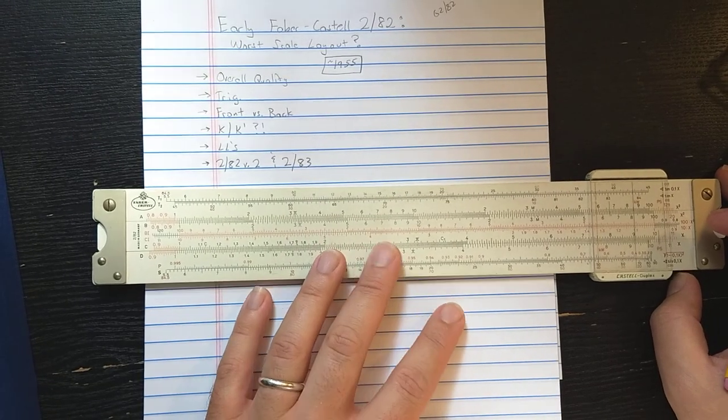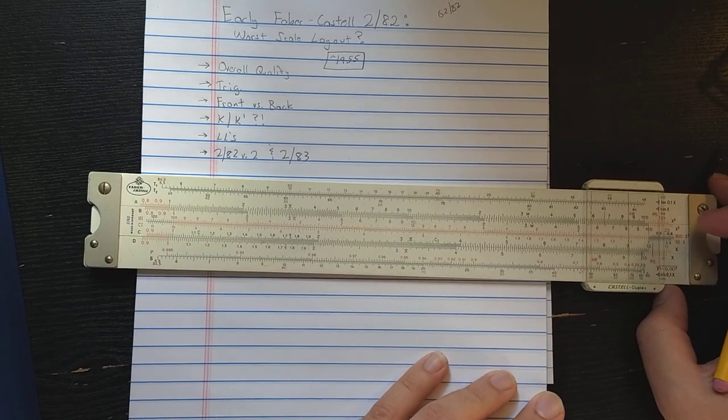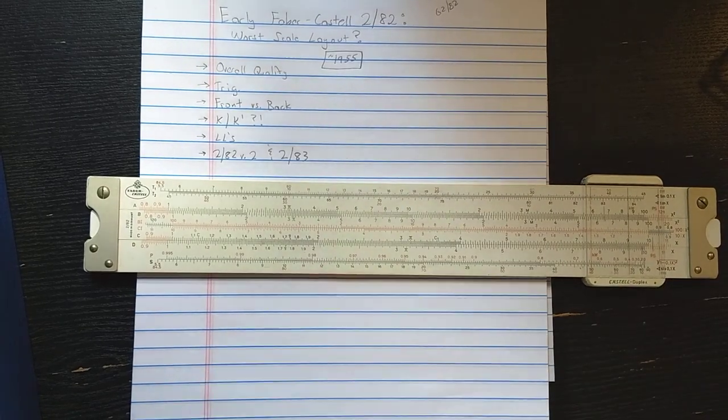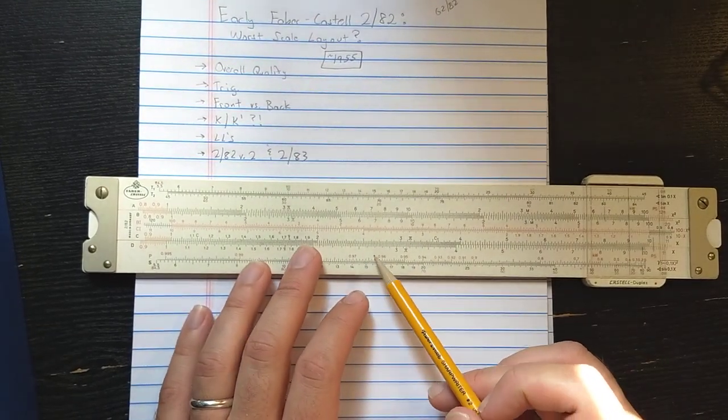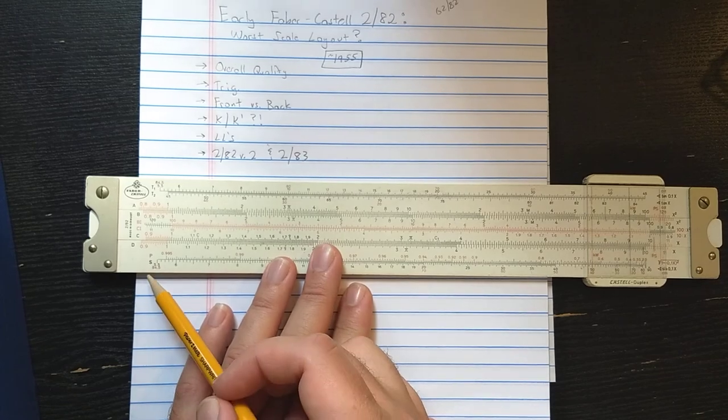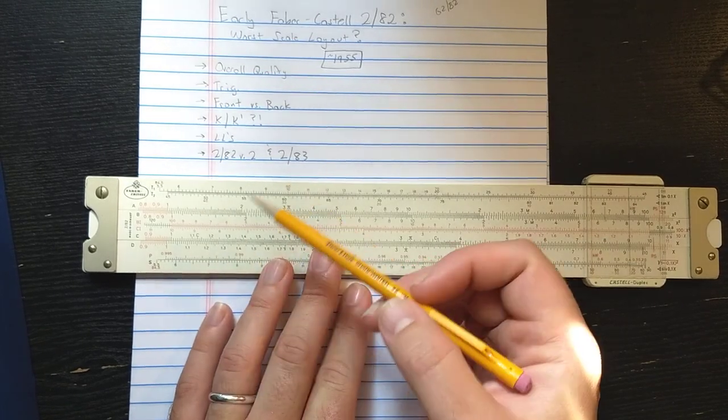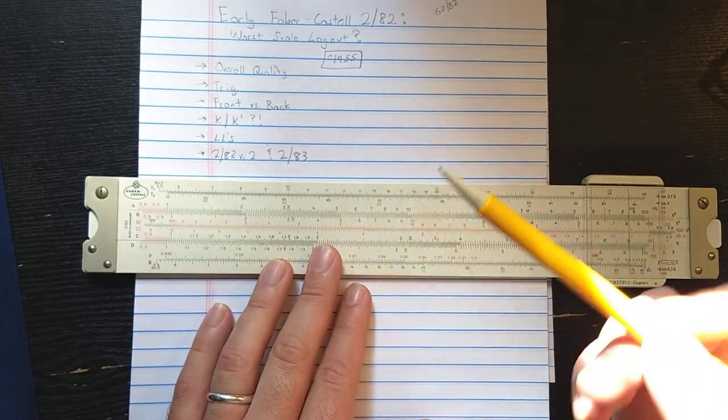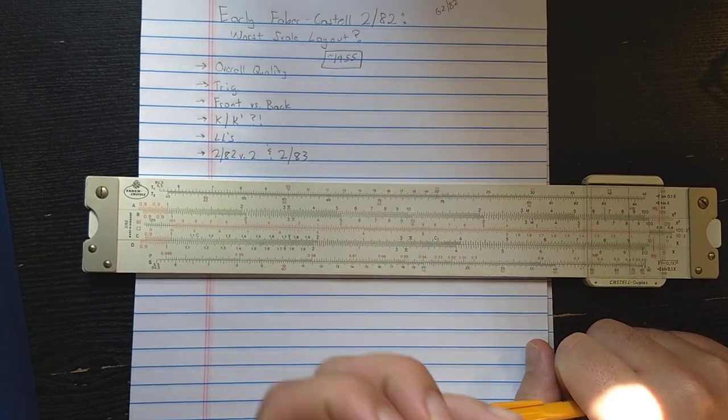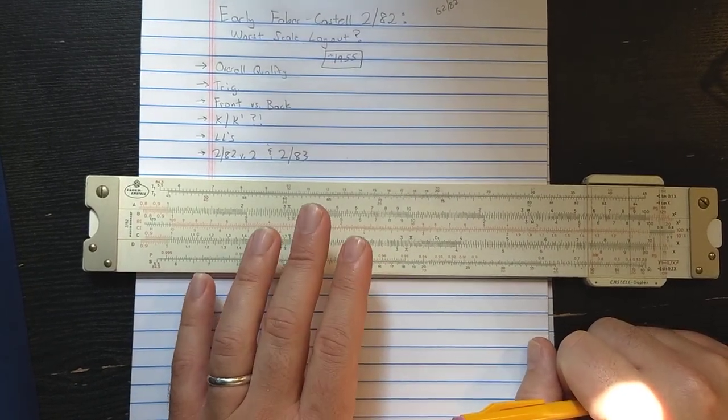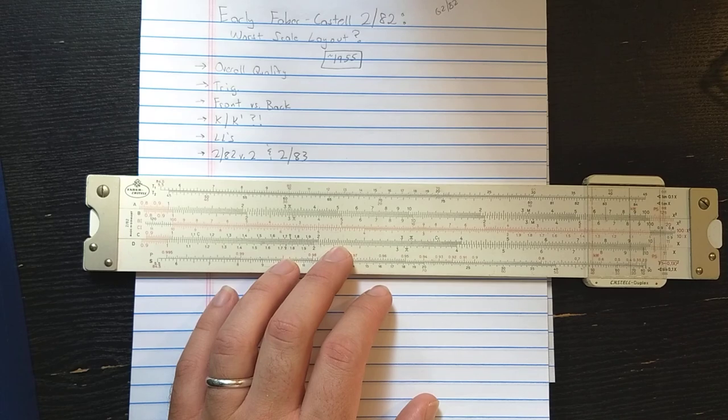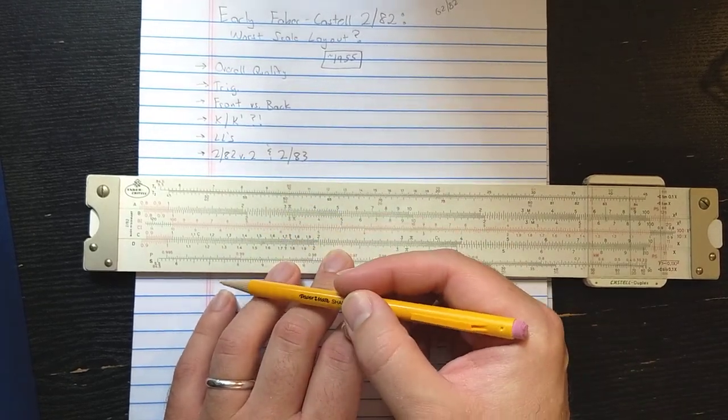Now you may have learned from some of my other videos, one of my criticisms of the Darmstadt design is the lack of an ST scale. So when I'm solving triangles, when I'm doing trigonometry on the slide rule, I don't like to have to vary my trigonometric solutions for the small angles, and so I really like to have ST on the base of a slide rule if I have trig on the base, or on the slide if I have trig on the slide.